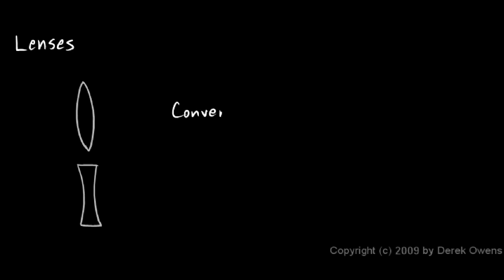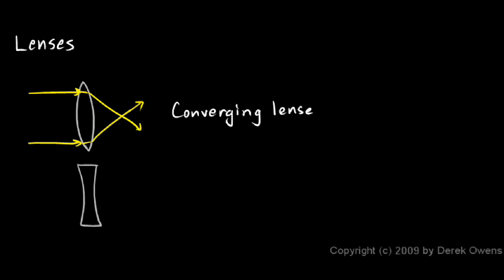Now we'll say a few things about lenses and the basics of how they work. There are, broadly speaking, two types of lenses. A converging lens, like you see here, is called a converging lens because it will cause incoming parallel rays of light to converge. If you have a ray of light coming in like this and like this, these light rays will bend as they go through the lens, and they'll converge — they'll cross and keep going — but at this point, what they call the focal point, they converge. So this is a converging lens.